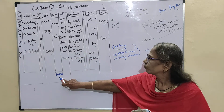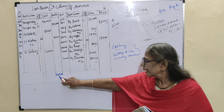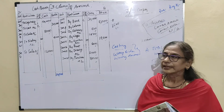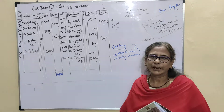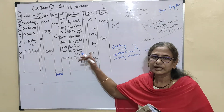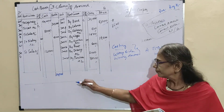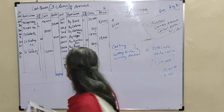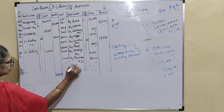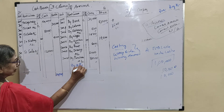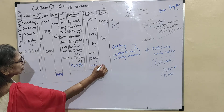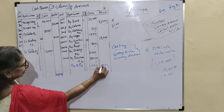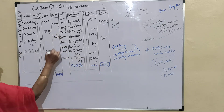That 34,100 should be there, but the accountant enters 34,000 — here also committing an error. Sometimes this error also may not be identified because this error is straight away taken to the trial balance. Because of this wrong totalling, the balance carried down will vary. It will vary in this bank column only — it is 34,000.